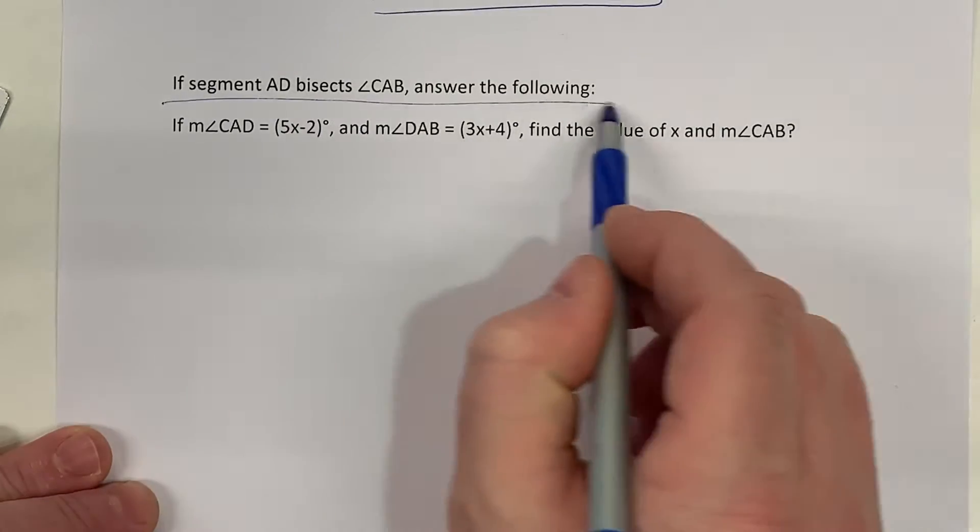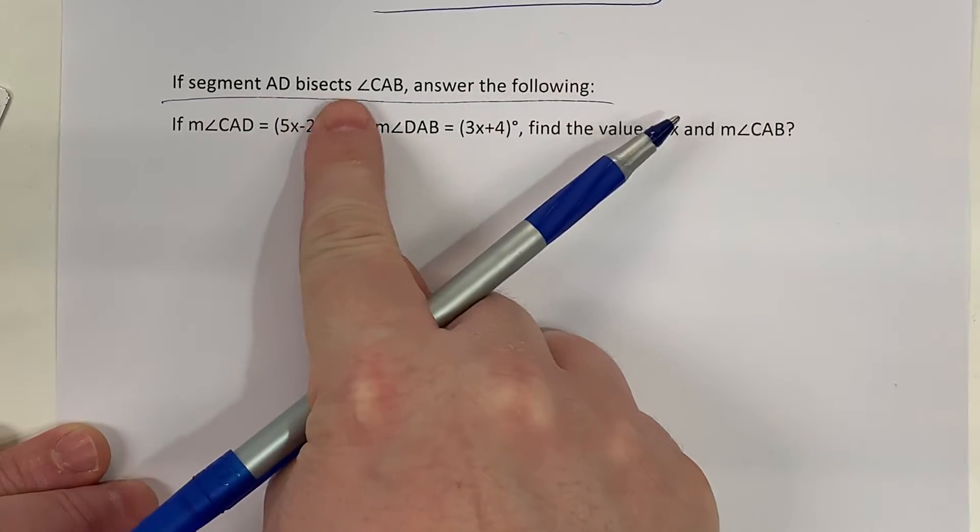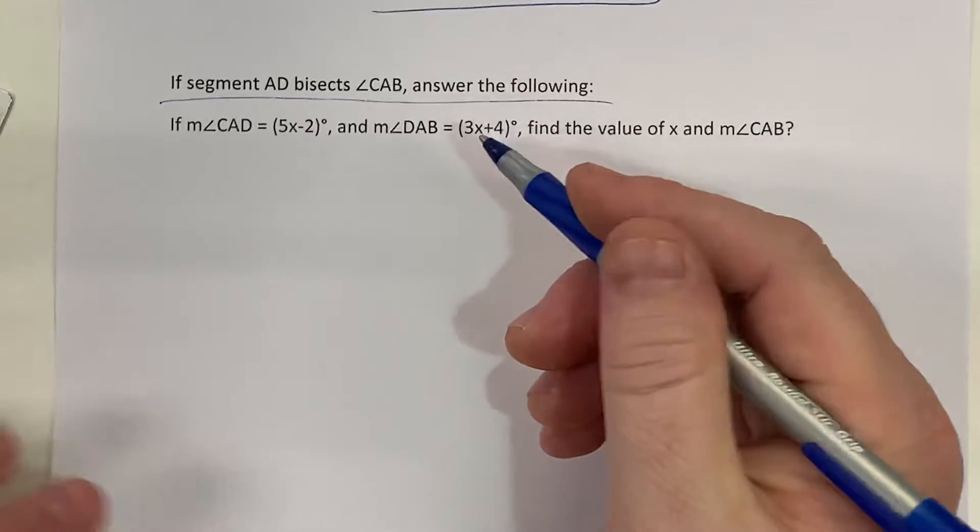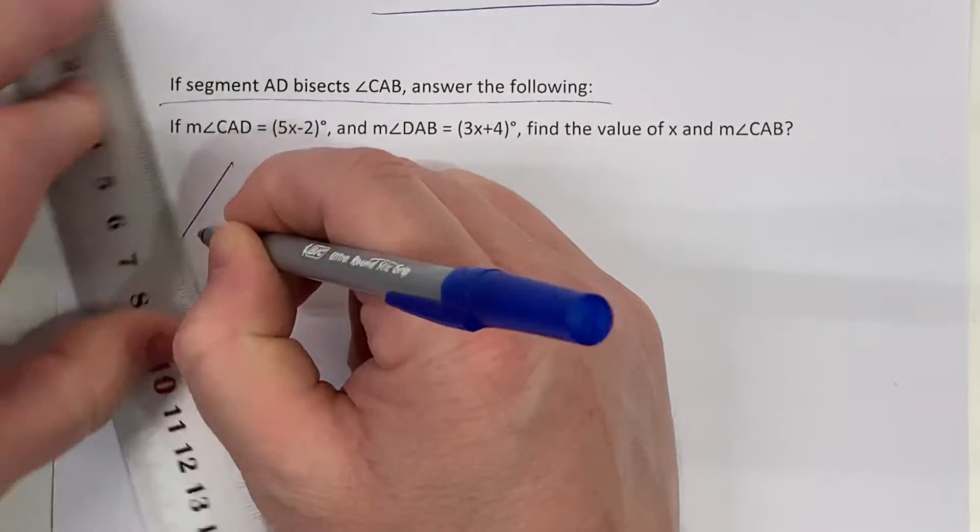The picture that we want to draw is going to represent the given information up here. Our given information is that if segment AD bisects angle CAB, answer the following. So I'm going to draw angle CAB.